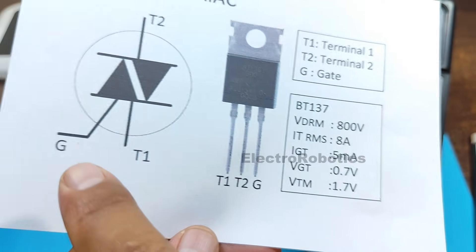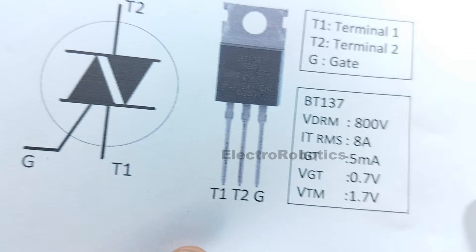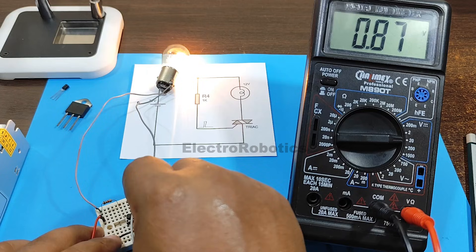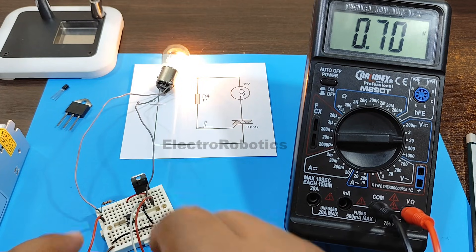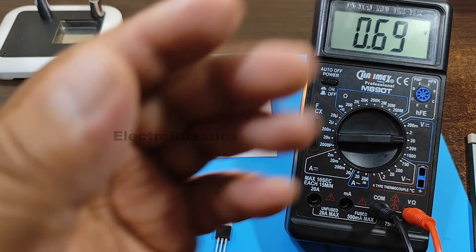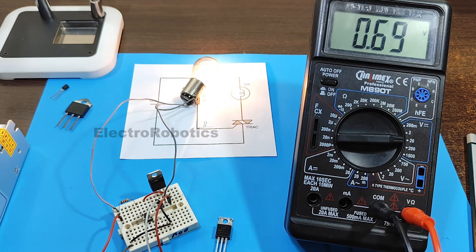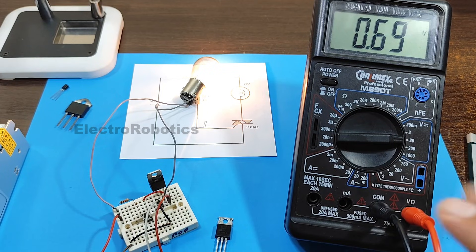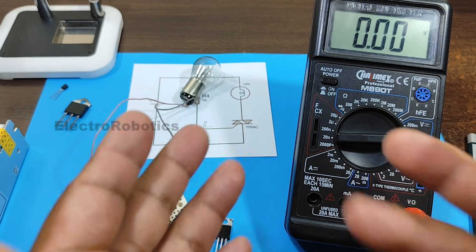Now let's look at the voltage at the gate with respect to T1. It shouldn't be greater than 0.7 volts. Therefore, we have the voltage between the gate and T1, which is 0.7 volts. Therefore, the characteristics of a triac are confirmed.